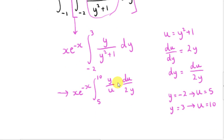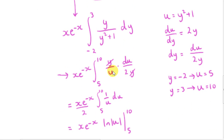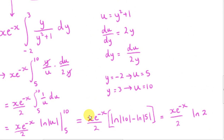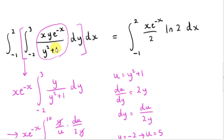We make our substitutions — the y's disappear, and we factor out one half. We are integrating 1 over u with respect to u, which gives the natural log of the magnitude of u. Plugging in the limits: ln 10 minus ln 5 equals ln(10/5), which is ln 2. So the inner integral evaluates to x e to the minus x times one half times ln 2. Now we need to integrate this result with respect to x from minus 1 to 2.